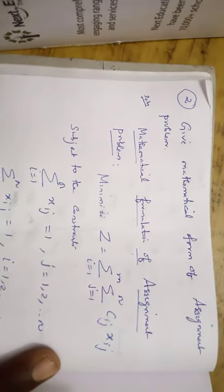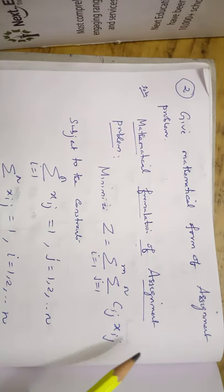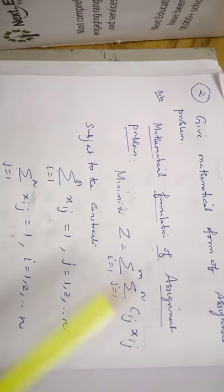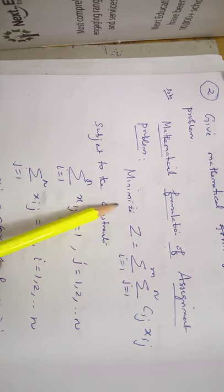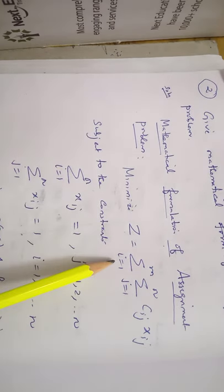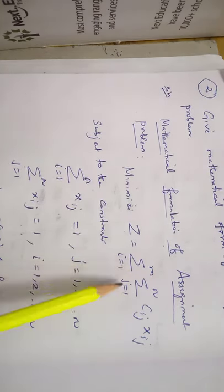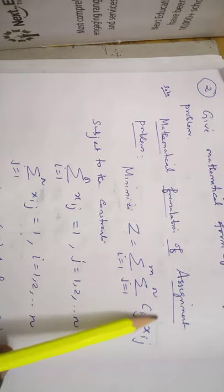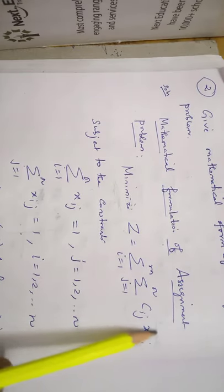Question number 2: Give the mathematical formulation of an assignment problem. This is purely mathematical form. The objective is to minimize cost Z, equal to sigma i equal to 1 to n, j equal to 1 to n, C_ij times X_ij.